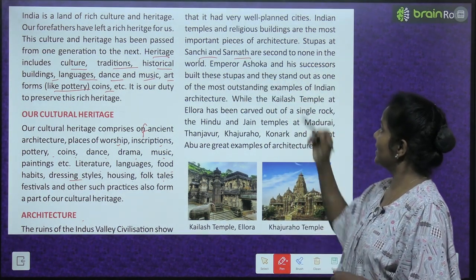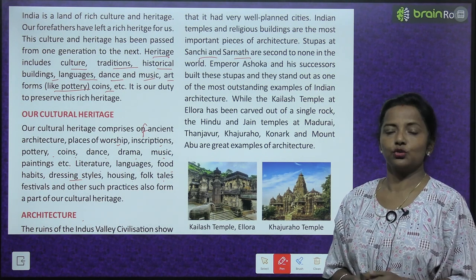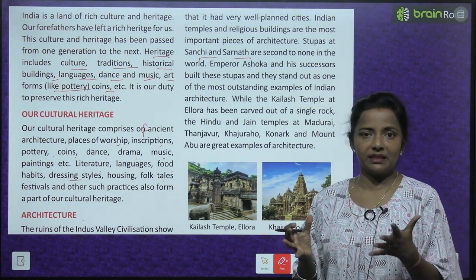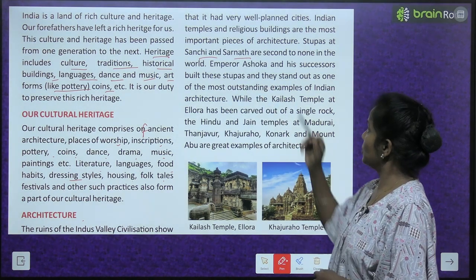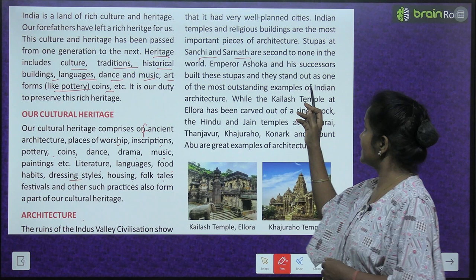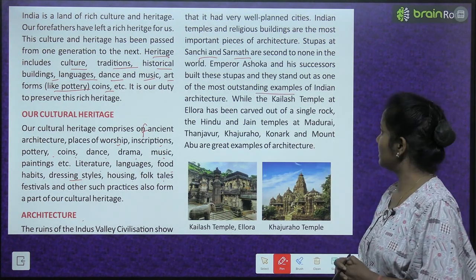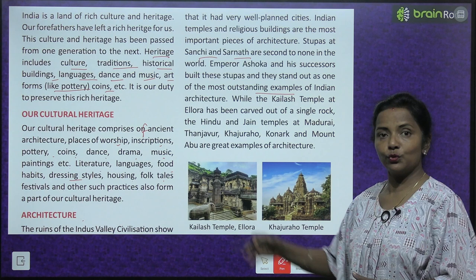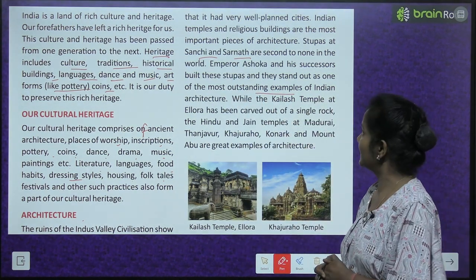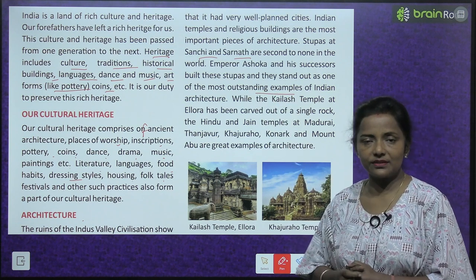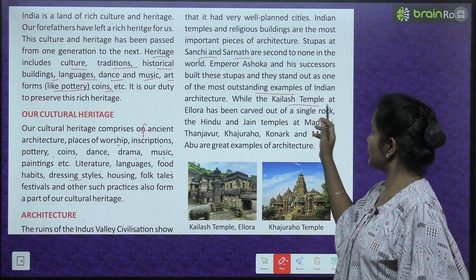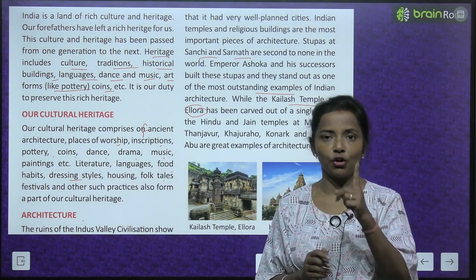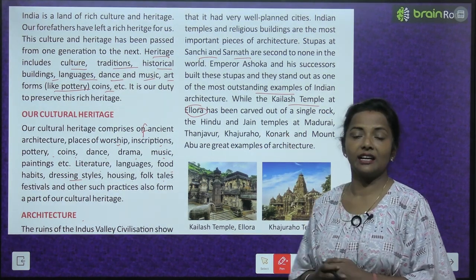Stupas at Sanchi and Sarnath are second to none in the world. Emperor Ashoka and his successors built these stupas, and they stand out as one of the most outstanding examples of Indian architecture. Indian architecture ka sabse bada example Sanchi stupa aur Sarnath stupa mein dekhne ko milta hai.